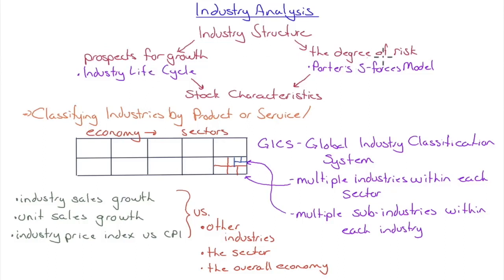In an industry analysis, we start with the structure of the industry, which tells us a lot about the potential profitability within it. Industry structure tells us about prospects for growth — we can look at the industry life cycle — and the degree of risk, which we can assess using Porter's Five Forces model. Combining the two, we can say something about particular stocks depending on where in the life cycle they are and the degree of risk in the industry.